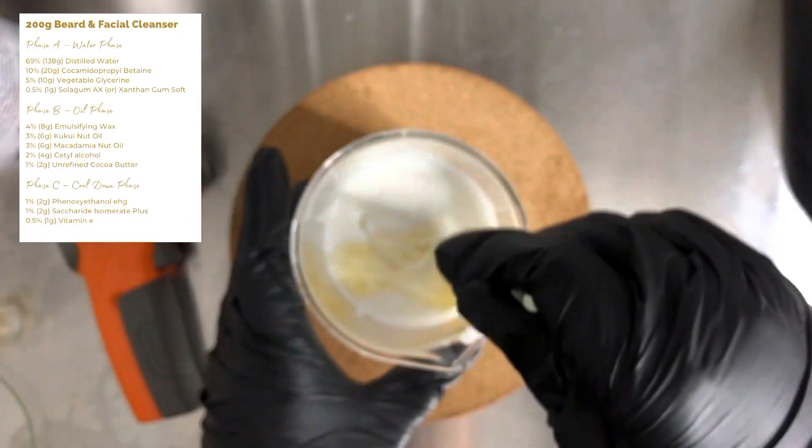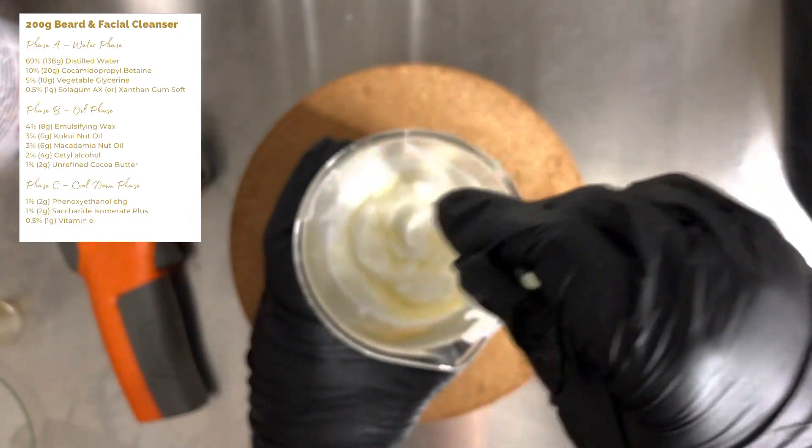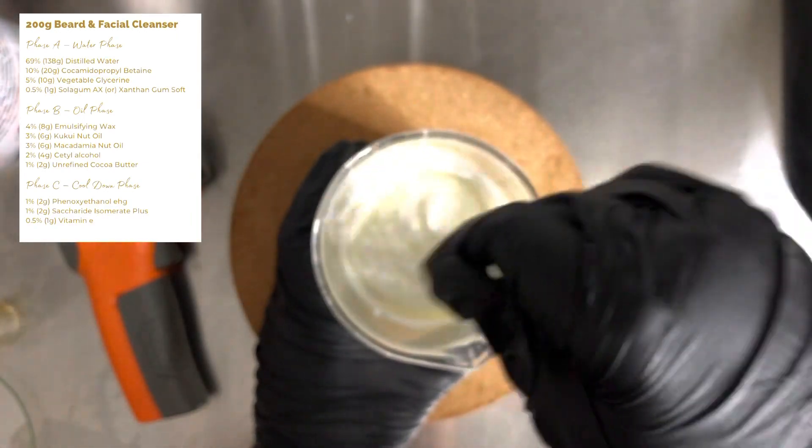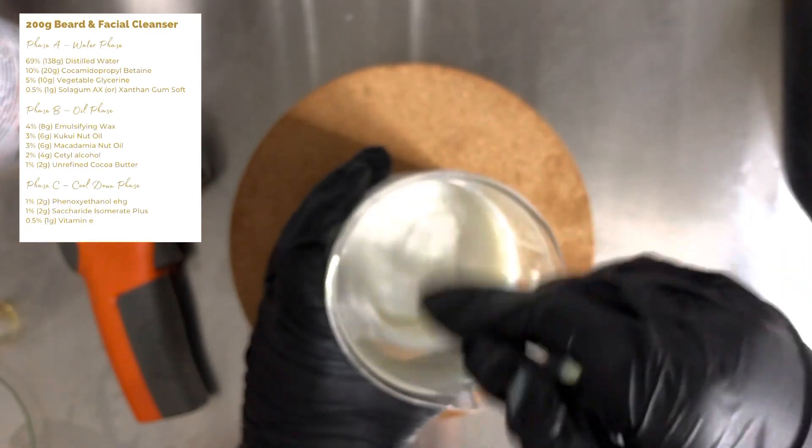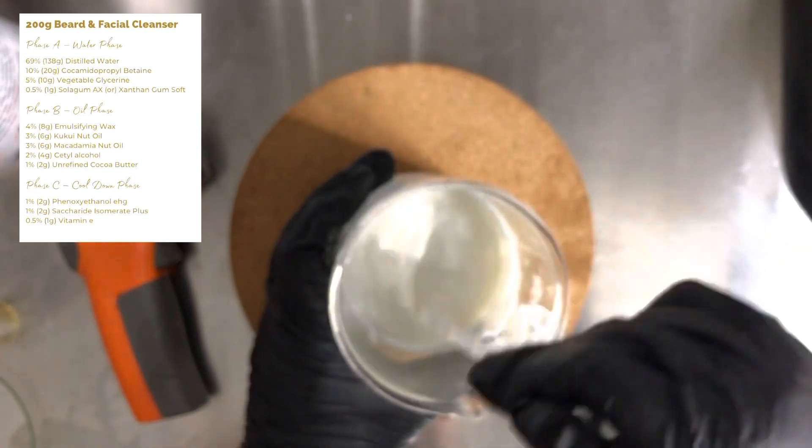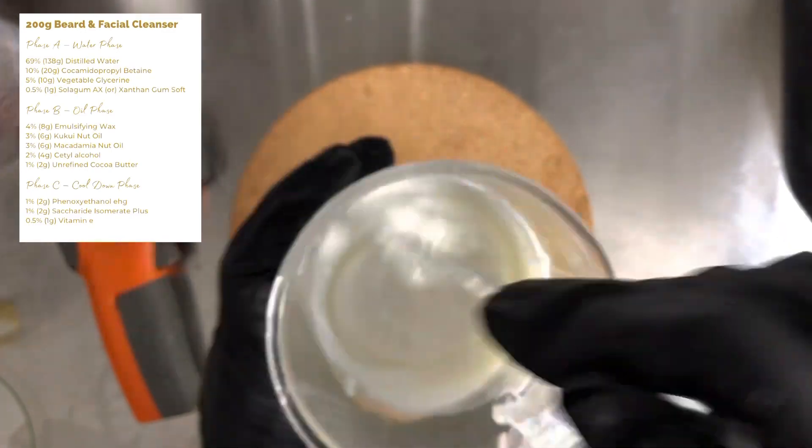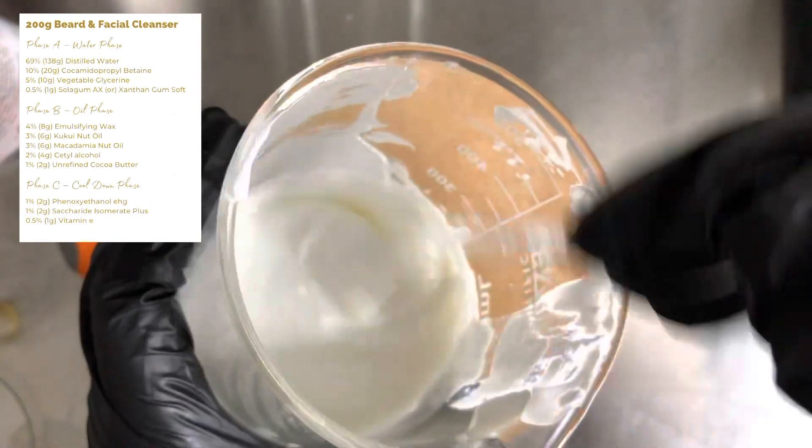And as you can see, I showed you in the beaker there because it had gone in nice layers in the beaker and I thought that was quite satisfying. Anyway, add that in, mix it by hand so you don't create too many bubbles. You don't need to shear mix at this point, just mix it really, really, really thoroughly.